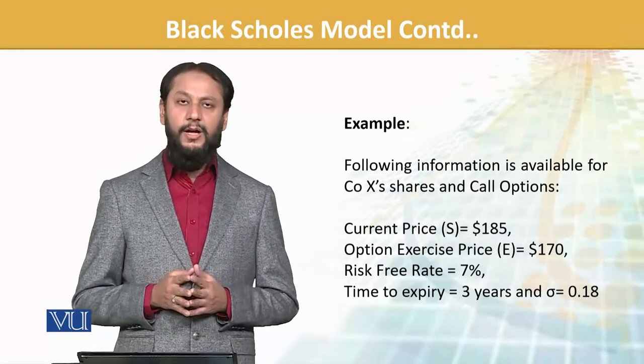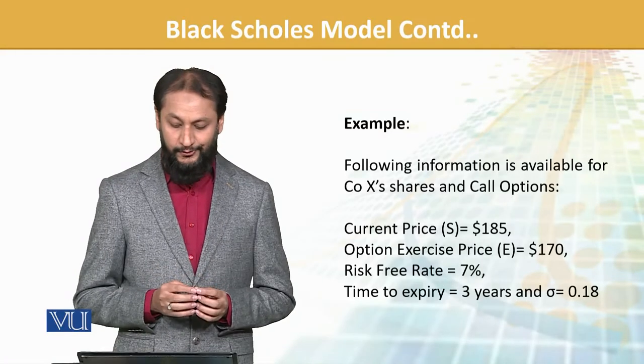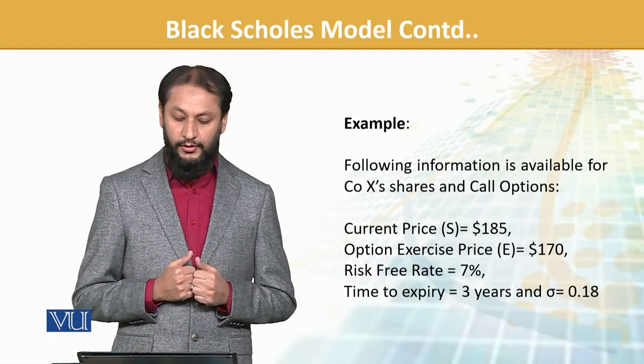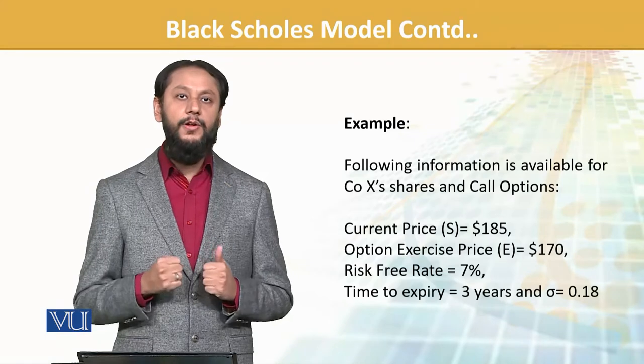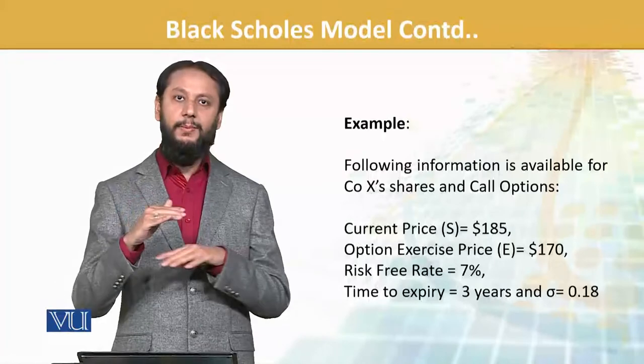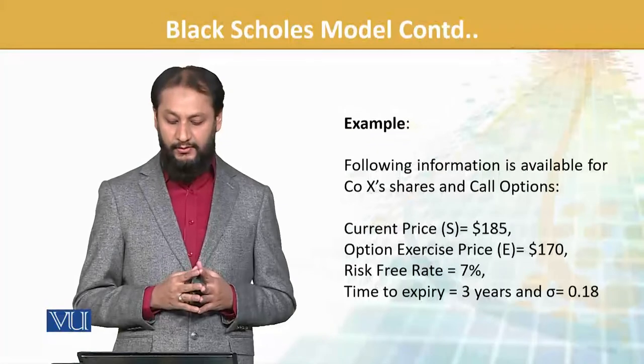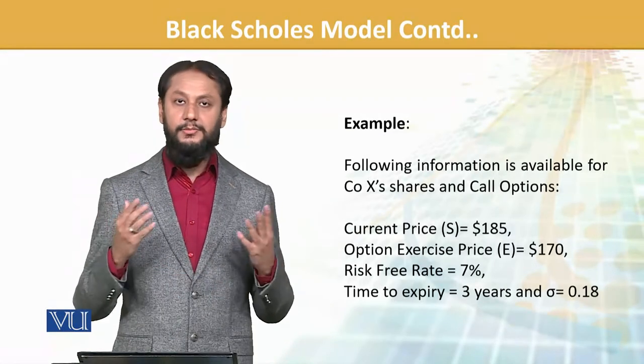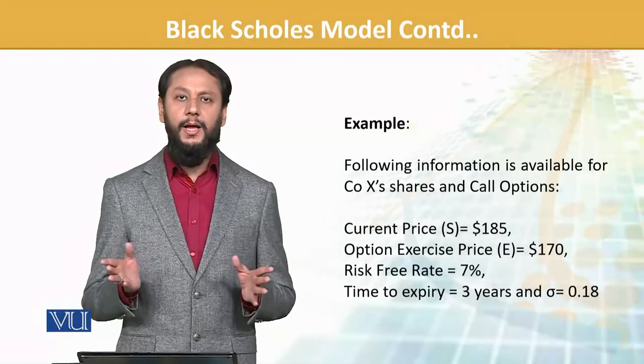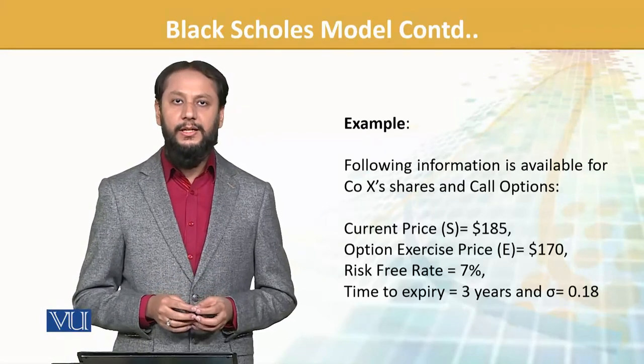Following information is available for Company X shares and call option. Current share price is 185, option exercise price is 170. If this is a call option, is it in the money or out of the money? In the money, because share is 185 and you have the right at 170. It's very much in the money. Risk-free rate is 7%, time to expiry is 3 years, standard deviation is 18%. This is our data, not difficult. Our data is simplified, we can easily grasp that.